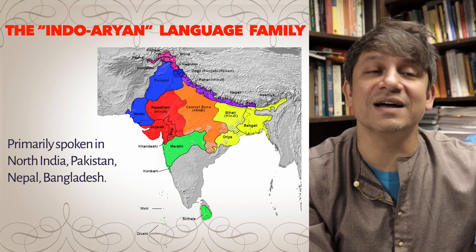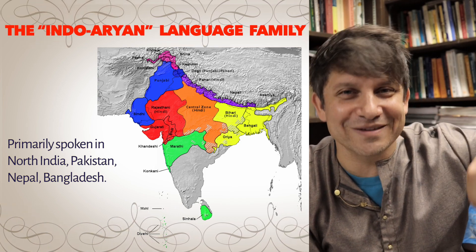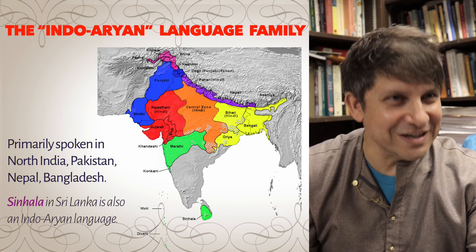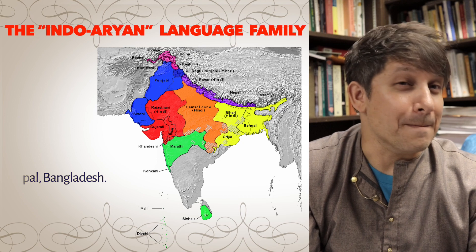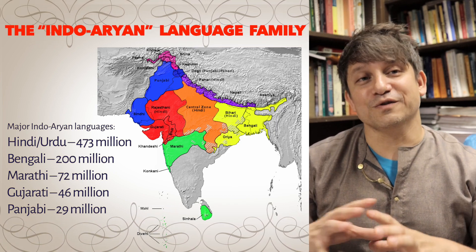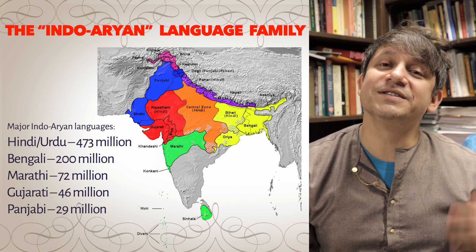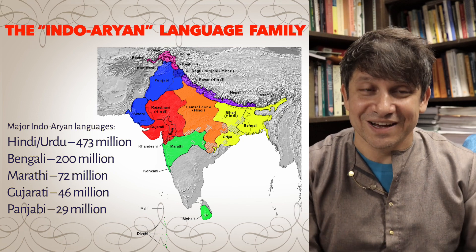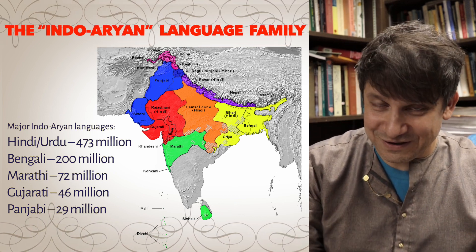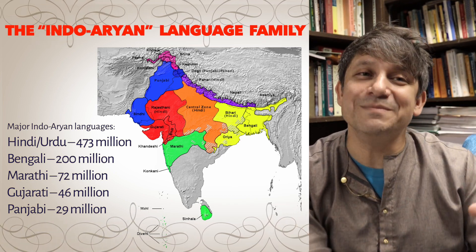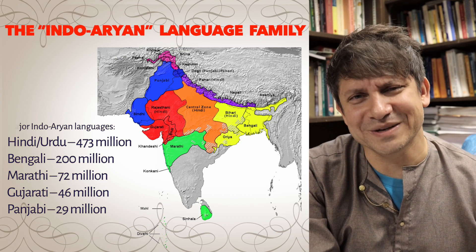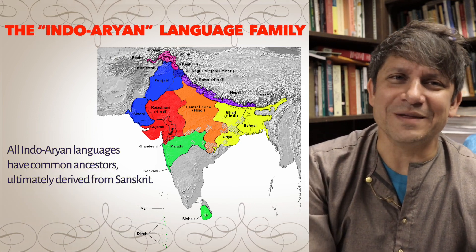There's one outlier all the way south in Sri Lanka called Sinhala, which seems to have arrived when a group of Buddhists migrated from the eastern coast of India about 2,000 years ago. Major modern Indo-Aryan languages include Hindi-Urdu, one of the two national languages of India with over 473 million speakers, as well as Bengali, Marathi, Gujarati, and Punjabi. While there are 29 million Punjabi speakers in India — almost the same as Canada's population — it's only the fifth largest language group in India.